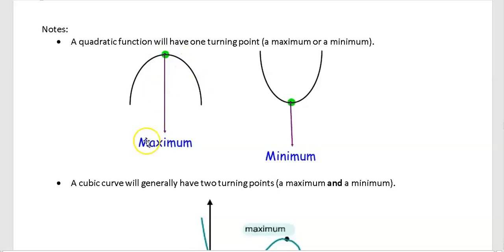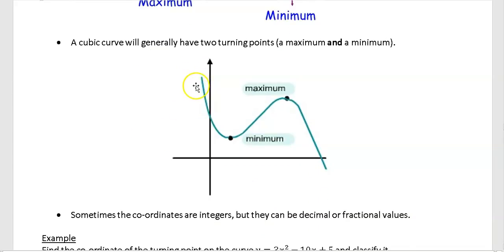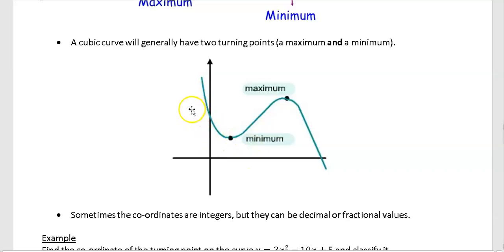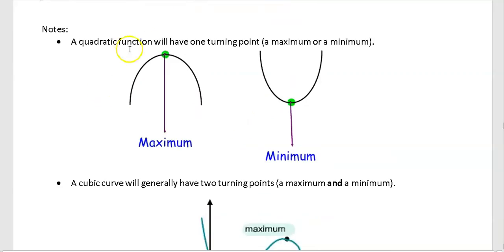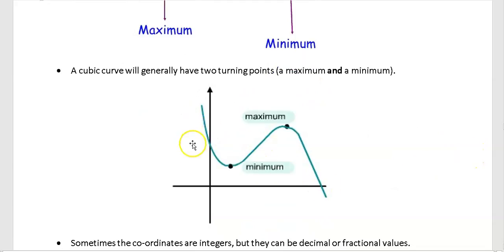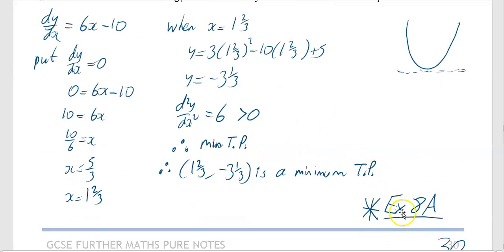A negative quadratic can only have a maximum — if you find a minimum, you've done something wrong. A cubic function, for example a negative cubic, will have both a minimum and a maximum turning point. So: a positive quadratic has only a minimum, a negative quadratic has only a maximum, but a cubic generally will have both a minimum and a maximum. You're now ready to do exercise 8A.